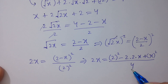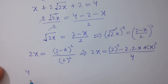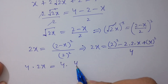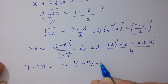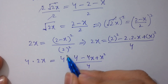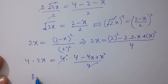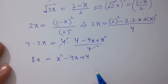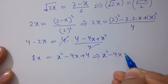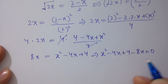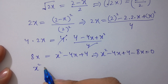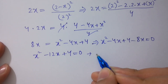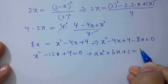Multiply both sides by 4: 4 times 2x equals (2 minus x) squared. Expanding: 8x equals x squared minus 4x plus 4. Rearranging: x squared minus 4x minus 8x plus 4 equals 0, which gives x squared minus 12x plus 4 equals 0. This is a quadratic equation of the form ax squared plus bx plus c equals 0.